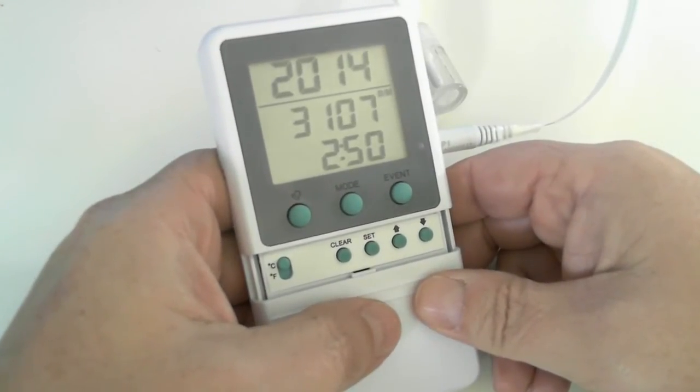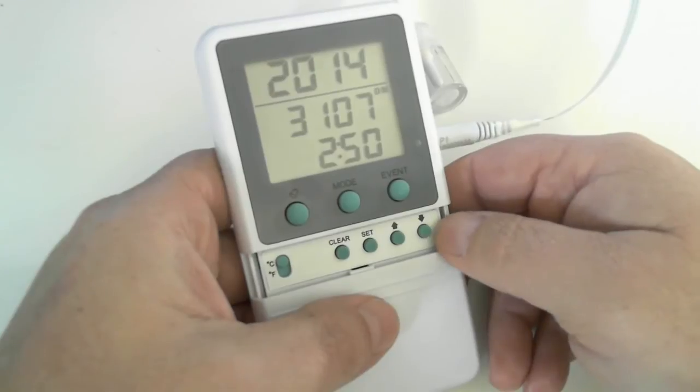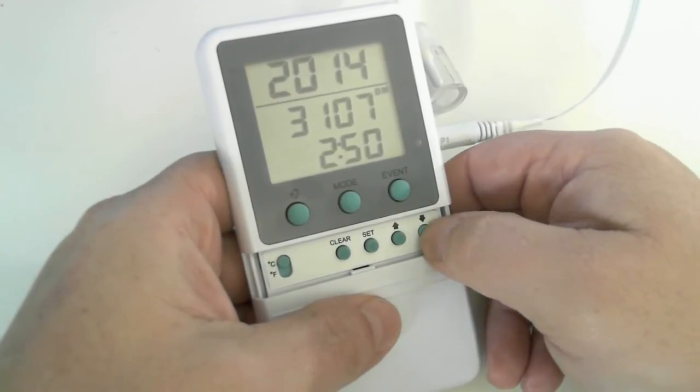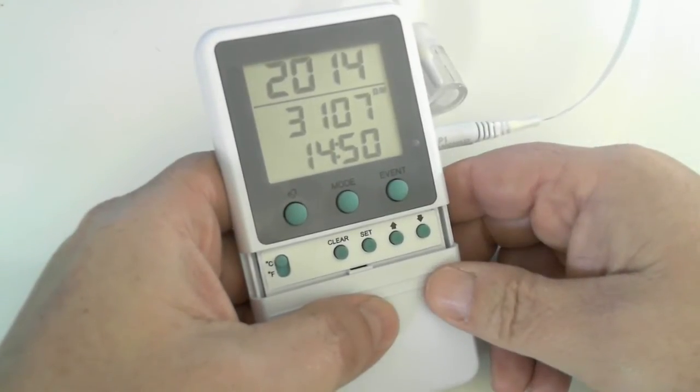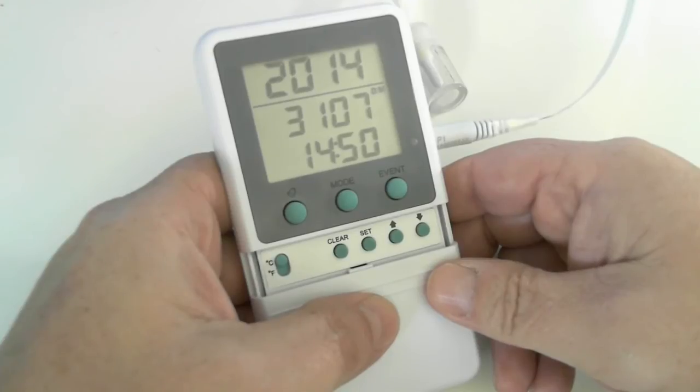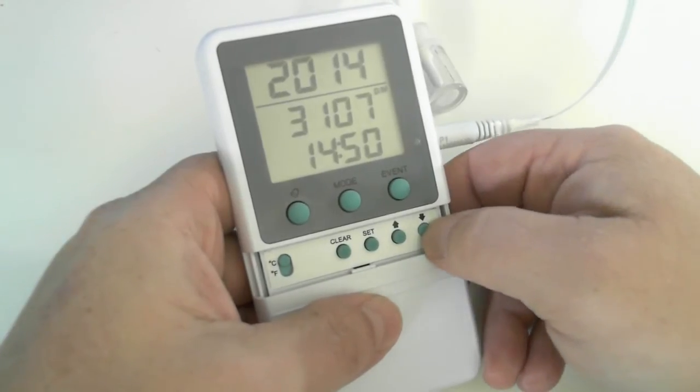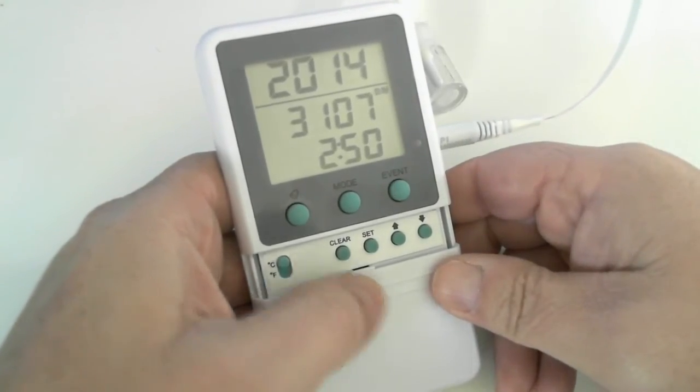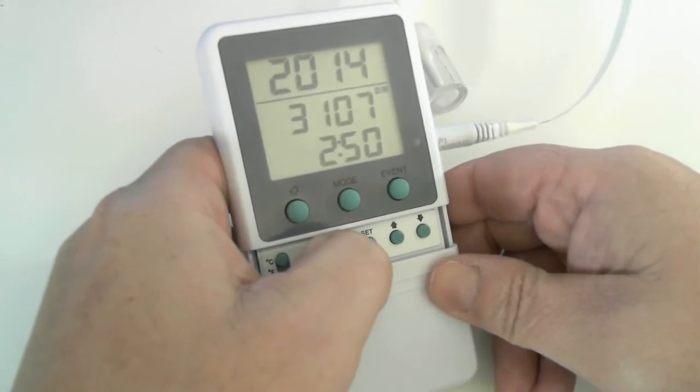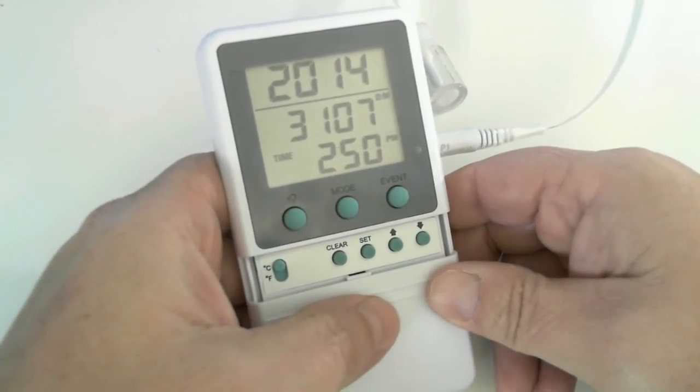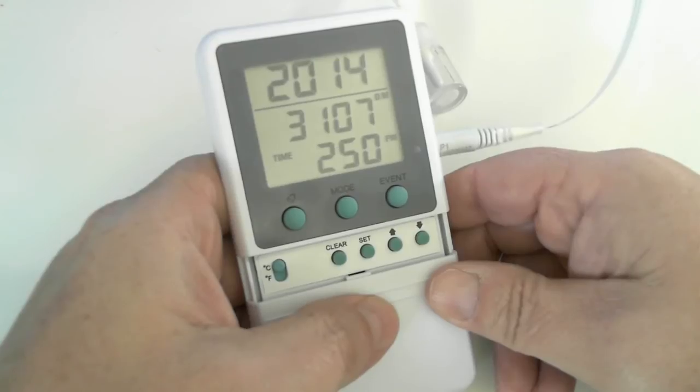And now we have the choice of AM or PM. Currently, the PM is selected. If you hit the up or down arrow, you will not see the PM. That means you have selected AM. Hit the up or down again. We see the PM. That's what I would like. Let me hit set. And our year, month, day, and time is now set.